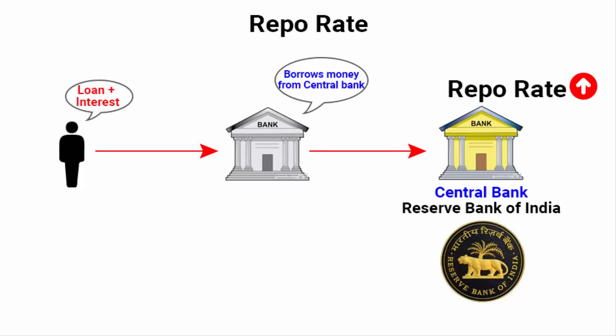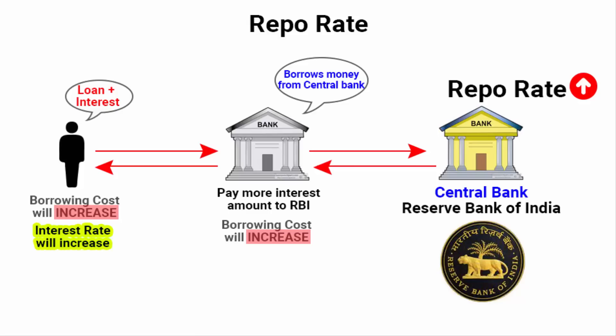Whenever RBI increases the repo rate, you will notice it will have a trickle-down effect. Banks that borrow money from RBI will have to pay more interest because of the increase in repo rate — meaning the cost of borrowing for banks from RBI will increase. That increased cost will naturally be passed on to common people like you and me. In a way, when RBI increases the repo rate, it is discouraging banks as well as common people from taking loans by making them pay a higher interest rate.